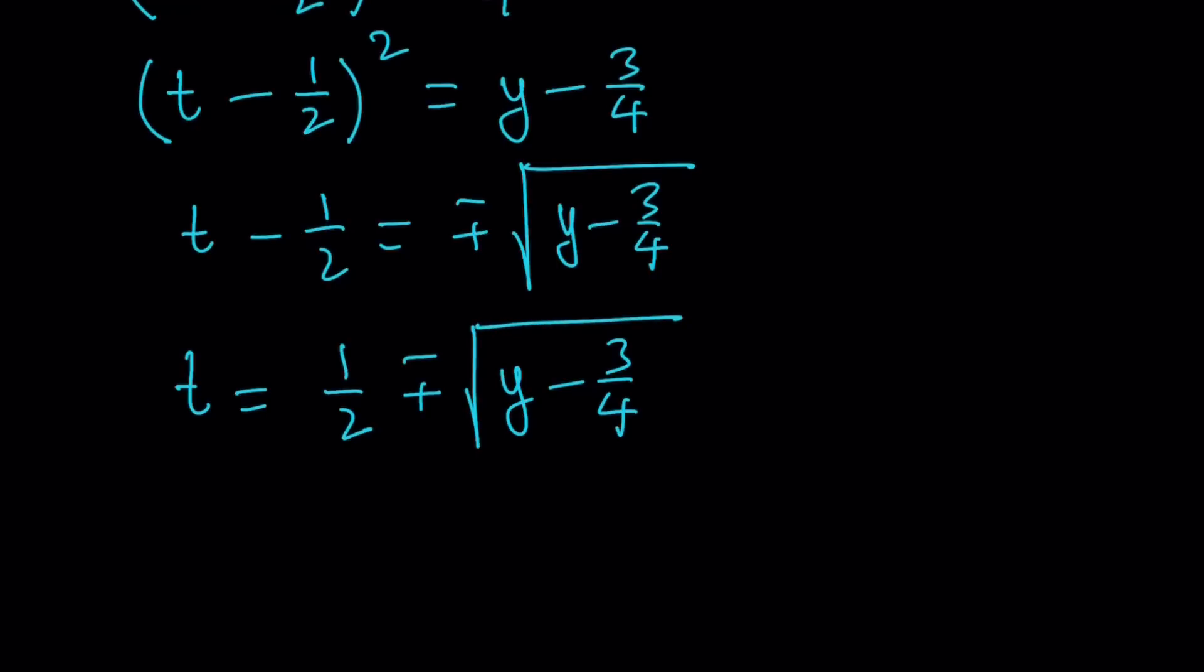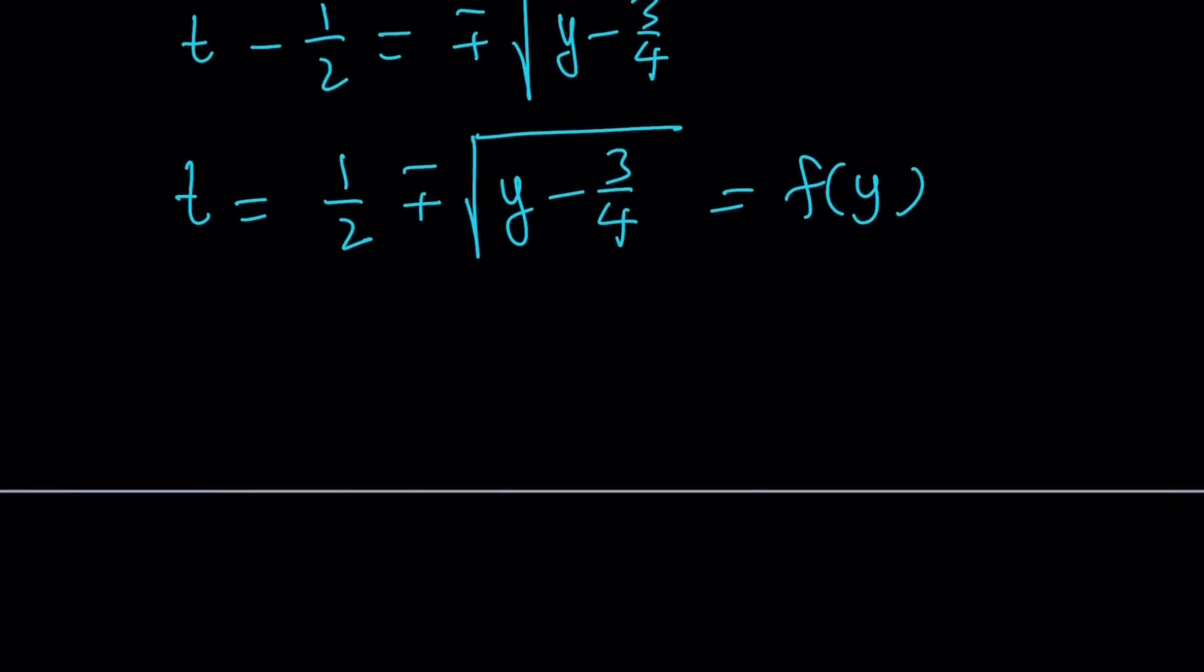So now the right hand side is kind of like a function of y, even though it's not well defined because we have two results. But for the time being, we can just go ahead and call this f of y, and our goal is to find f of 21 over 16. So since we're trying to find this, it makes sense that we replace y with 21 over 16. That way you're going to be able to see what happens in each case.